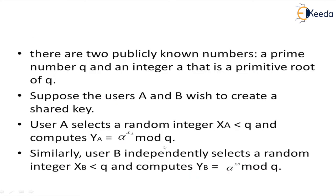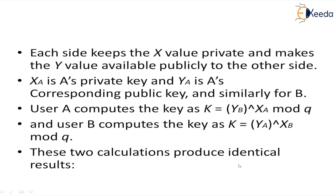There are two publicly known numbers: a prime number q and an integer alpha that is a primitive root of q. Suppose users A and B wish to create a shared key. User A selects a random integer x_A which is less than q and computes y_A = alpha raised to x_A mod q. Similarly, user B independently selects a random integer x_B less than q and computes y_B = alpha raised to x_B mod q. Each side keeps the x value private and makes the y value publicly available. So x_A is the private key and y_A is the corresponding public key, and similarly for B.